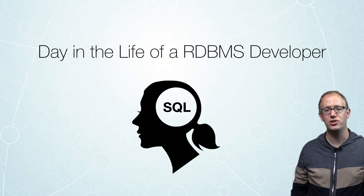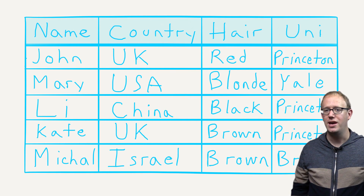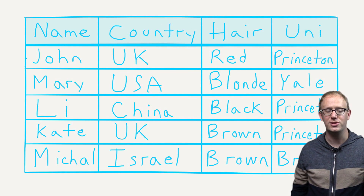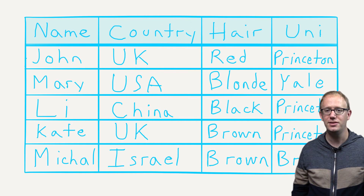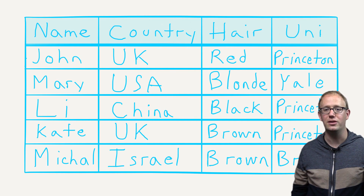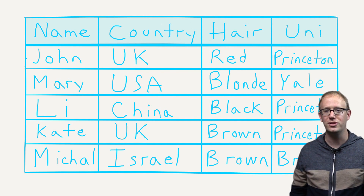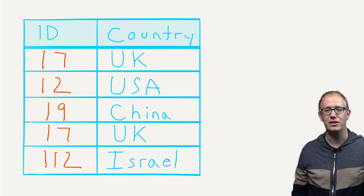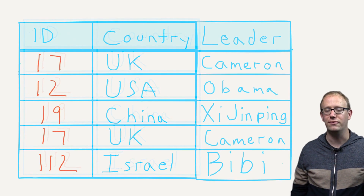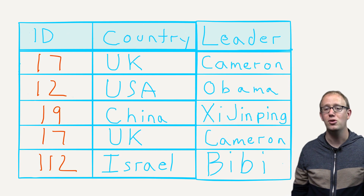A relational database developer's ideal table looks something like this — people and the country they're from, their hair color, the university they attended. This data is easy to read, and easy to onboard new people. But it's hard to maintain consistency when data is in this form: UK appears multiple times, Princeton appears multiple times. What happens if the name of a country or university changes? So we create another table with the names of each country, using auto-generated numerical primary keys referenced as foreign keys.